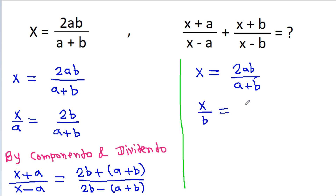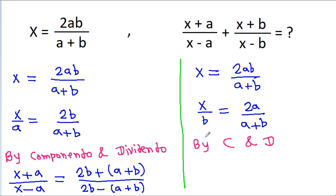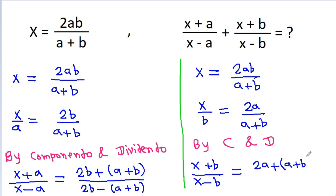We can get x by b is equal to 2a by a plus b, and again by componendo and dividendo we can get x plus b by x minus b is equal to 2a plus a minus b by 2a minus a minus b.